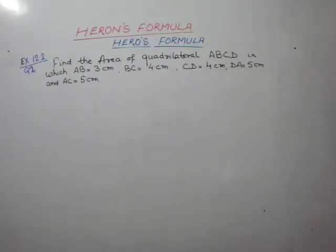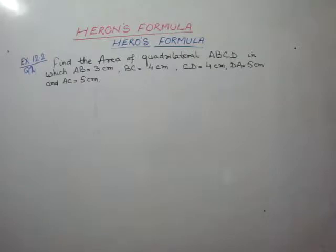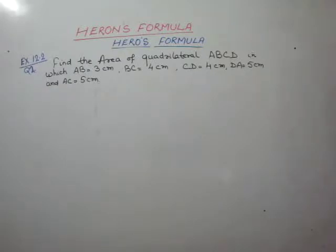The question is: find the area of quadrilateral ABCD in which AB is equal to 3 cm, BC is equal to 4 cm, CD is equal to 4 cm, DA is equal to 5 cm, and AC is equal to 5 cm.